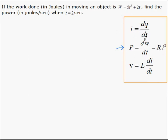In this case, we have work, so we'll use the instantaneous rate of change of work. So dW by dt is equal to 20T to the 3 plus 2.